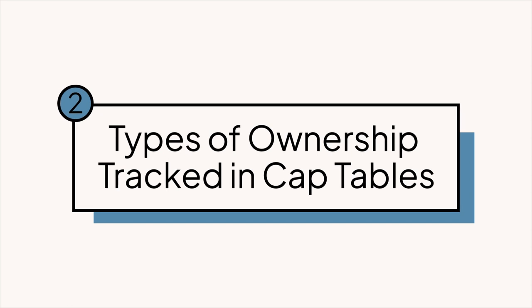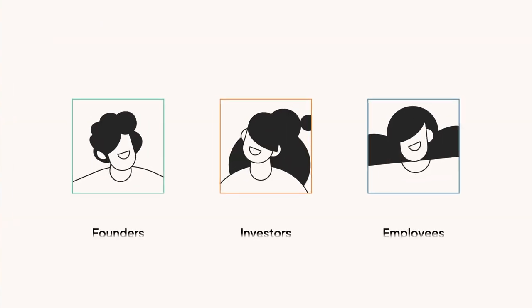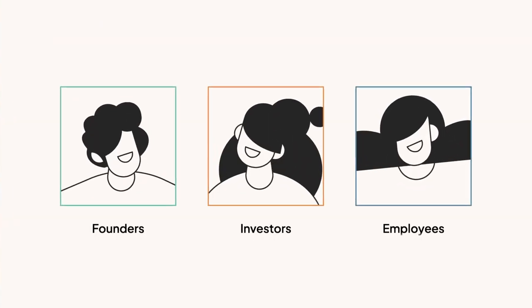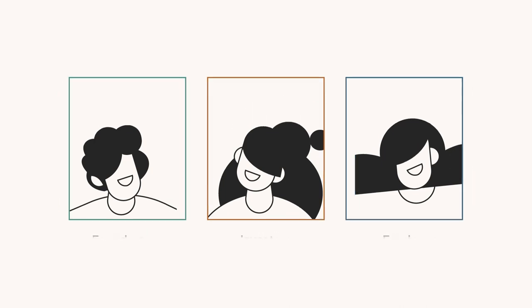Your cap table is going to list every single person or entity that owns a piece of your company. Generally, that means founders, investors, employees, and maybe advisors or consultants. Now that you have the list, the single most important piece of info you'll need to put into your cap table is this.